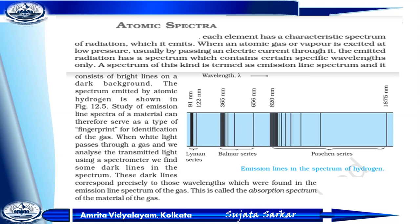The emission line spectrum consists of bright lines on a dark background. The spectrum emitted by atomic hydrogen is shown in the figure. The study of emission line spectra of a material can serve as a type of fingerprint for identification of gases. When white light passes through a gas and the transmitted light is analyzed using a spectrometer, we find some dark lines in the spectrum. Each dark line corresponds to those wavelengths found in the emission line spectrum of the gas. This is called the absorption spectra of the gas.